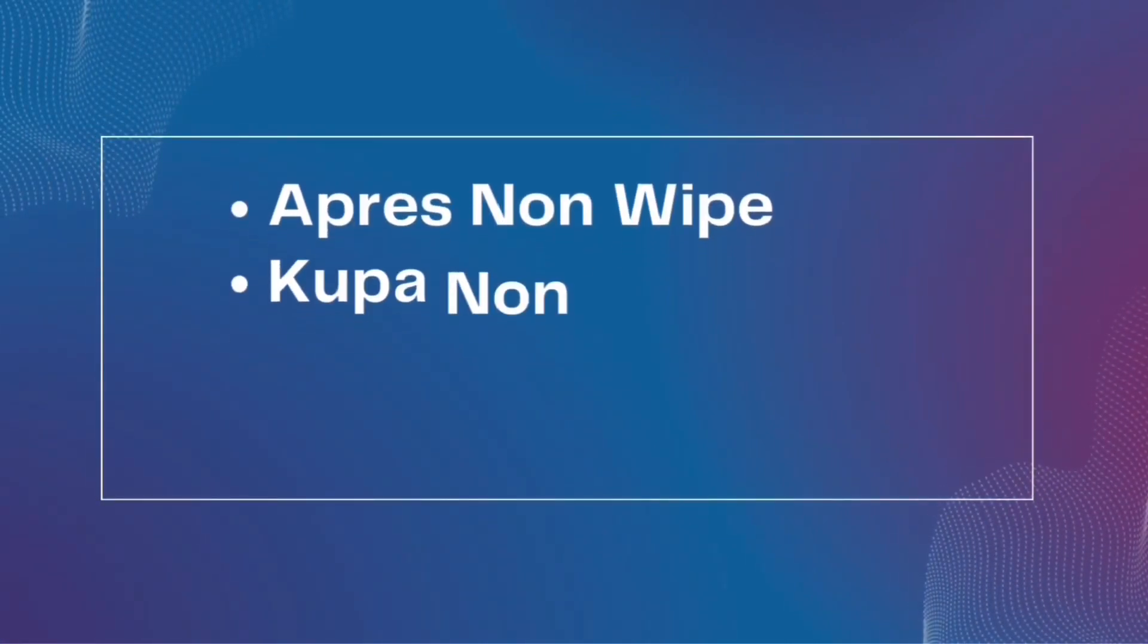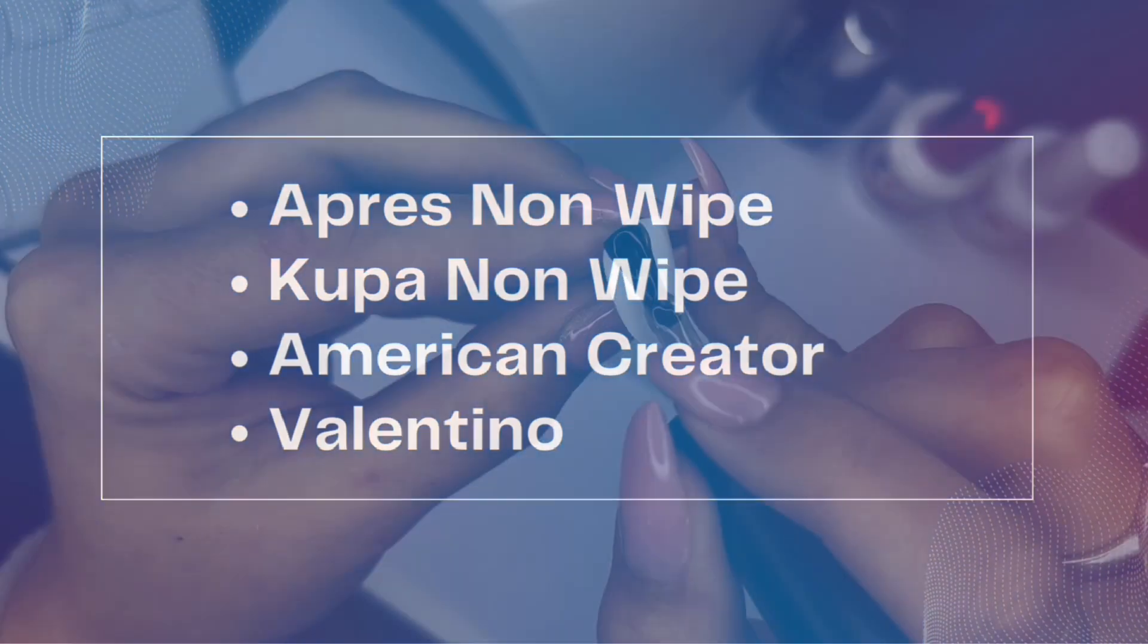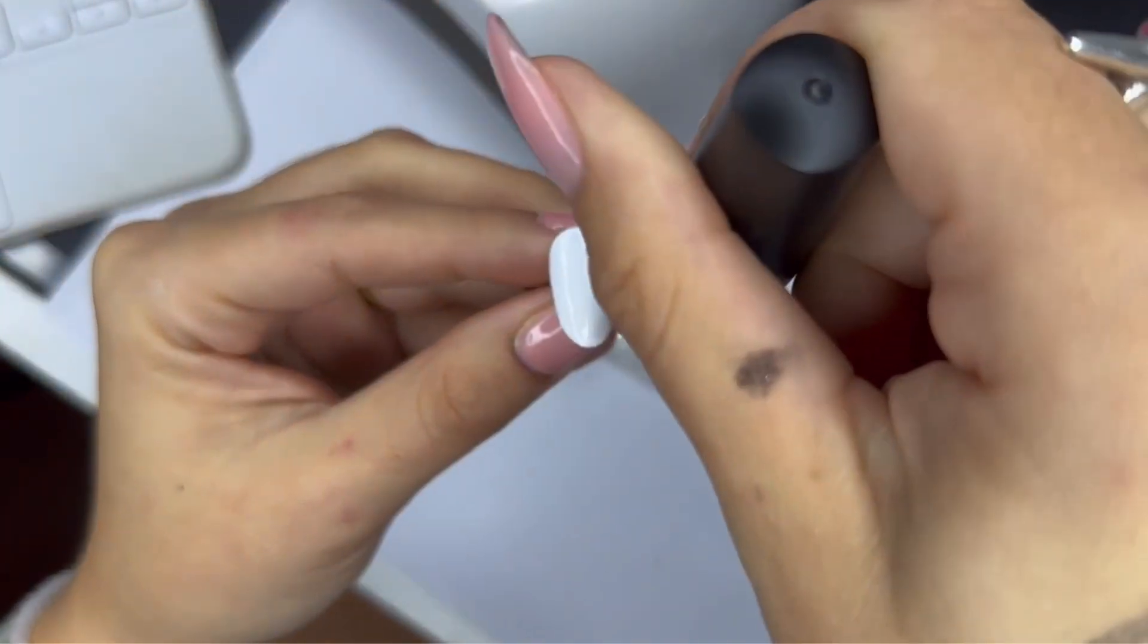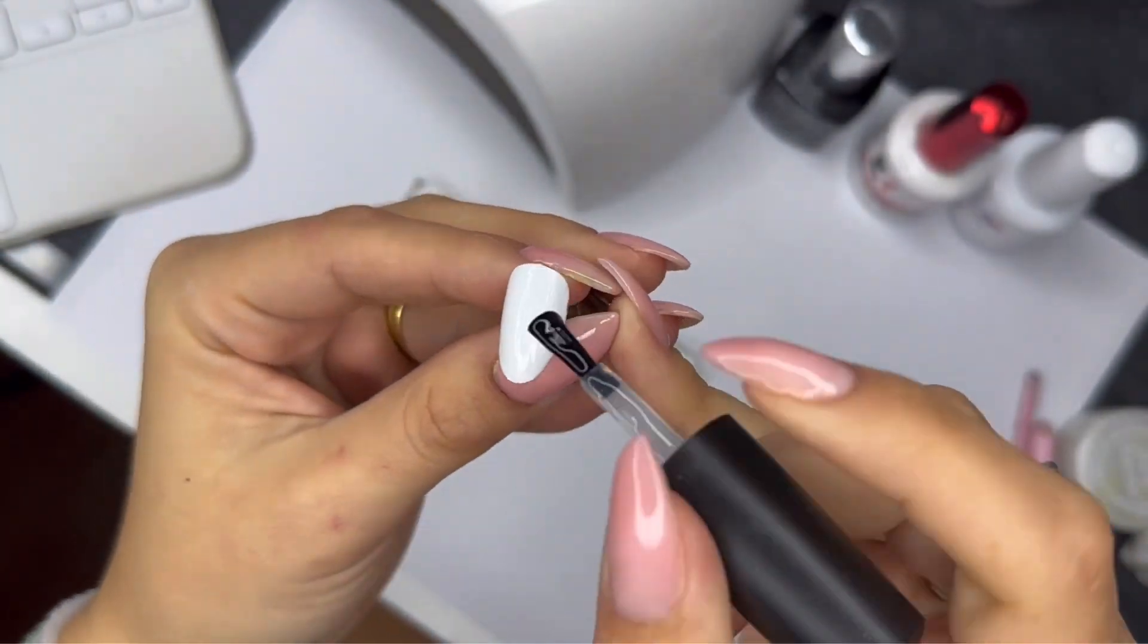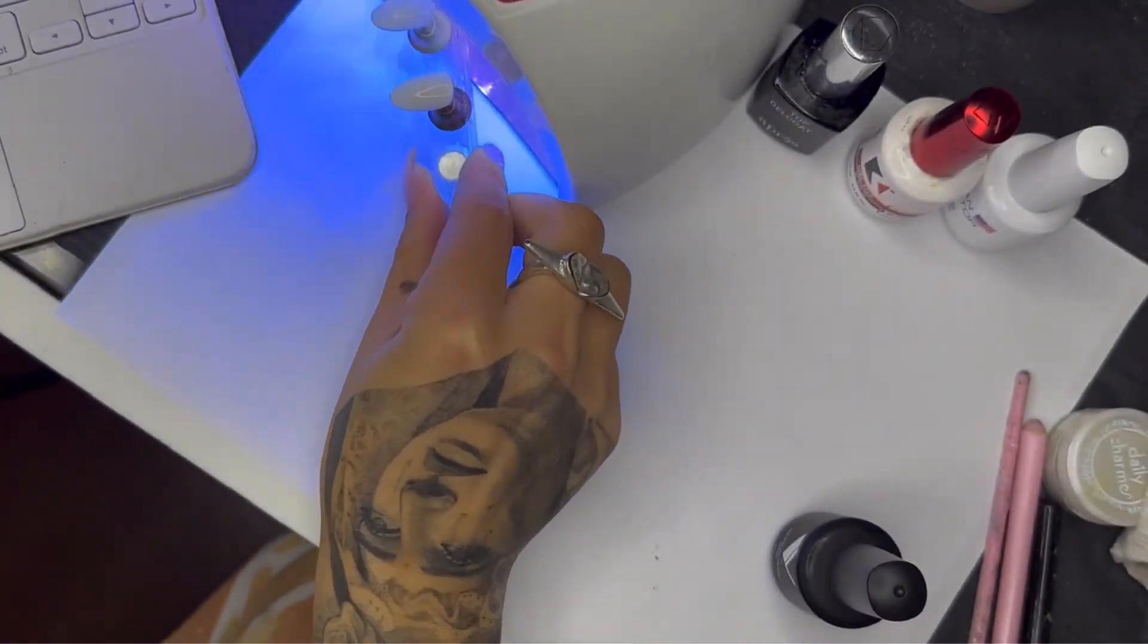I have a Prey top coat, the Koopa top coat, an American Creator top coat, and a Valentino top coat. I'm putting all of them in these tips and we're going to dry them and see what's going to happen next.